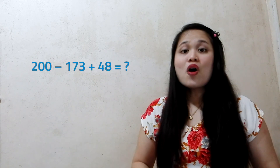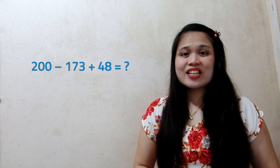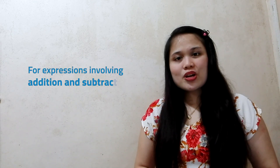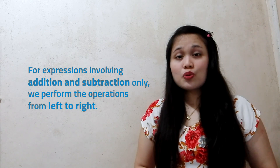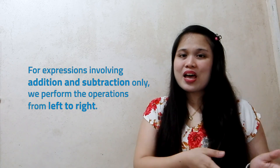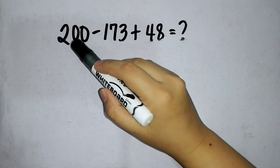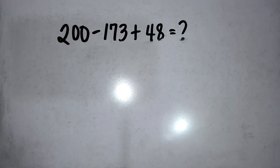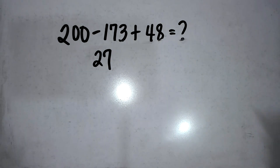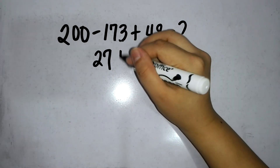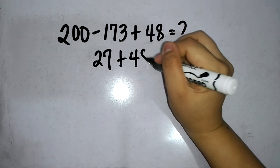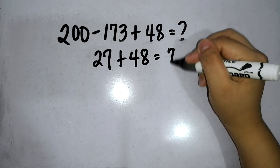Take a look at this. What are the operations you can spot in this expression? We have subtraction and addition here. For expressions with addition and subtraction only, we perform the operations from left to right. To solve the problem, we first subtract 173 from 200. The difference will be 27. Then add 48 and 27. So the final answer is 75.